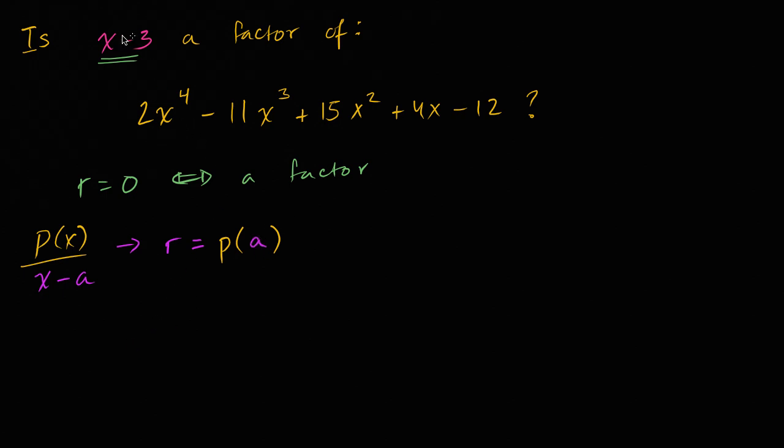So let's see what's a in this case. In this case, a is positive 3. So let's evaluate our polynomial at x equals 3. If what we get is equal to 0, that means our remainder is 0, and x minus 3 is a factor. If we get some other remainder, then we have a non-zero remainder and this isn't a factor. So let's try it out.